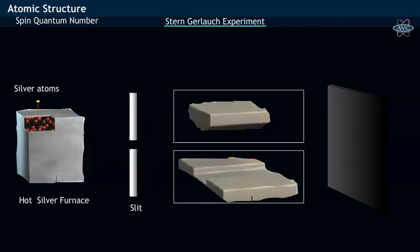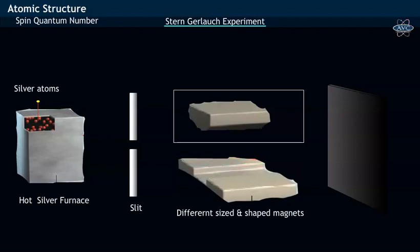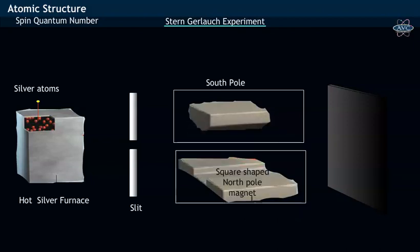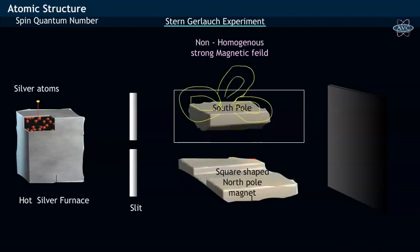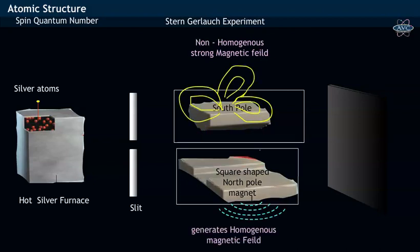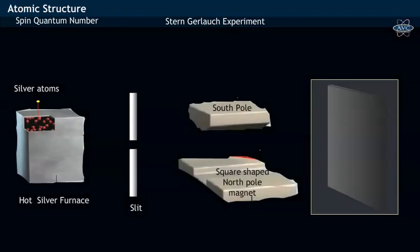Stern has arranged different shape and different sized magnets with pointed south pole and square type north pole. The pointed south pole generates strong magnetic field and hence pulls towards the south pole more prominently, which in turn generates a non-homogeneous magnetic field. At the end of the apparatus, a photographic detecting screen is arranged.